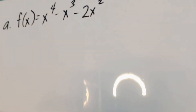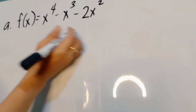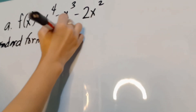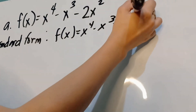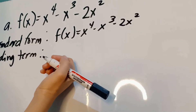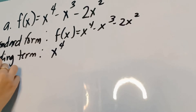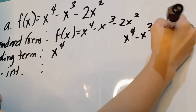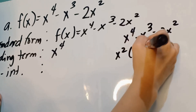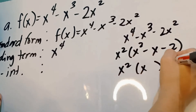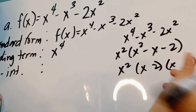Let's describe the properties of the polynomial function f(x) = x⁴ - x³ - 2x². This is already in standard form. The leading term is x to the fourth, which is the term with the highest exponent. To find the x-intercepts and their multiplicity, factor out x²: x²(x² - x - 2), then factor further to get x²(x - 2)(x + 1).